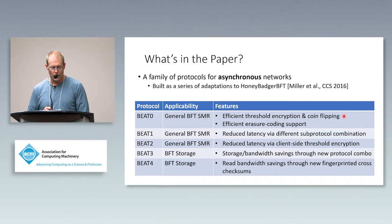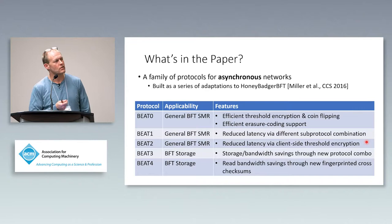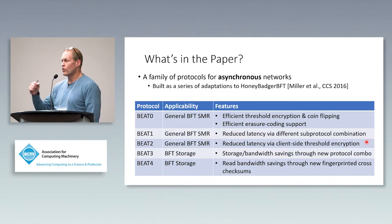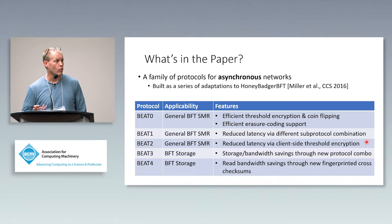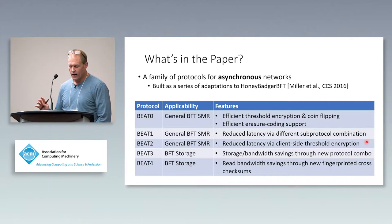One requirement I haven't mentioned yet is censorship resistance — also called fairness — where you want to prevent faulty replicas from suppressing certain requests. The idea is to encrypt requests before they enter the protocol using threshold encryption, and only decrypt them after they've already been ordered, making it too late to selectively suppress any of them. I'll have to skip over the details of that in this talk.